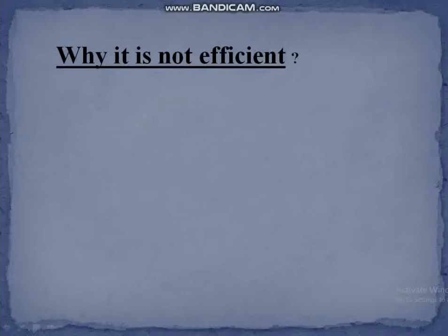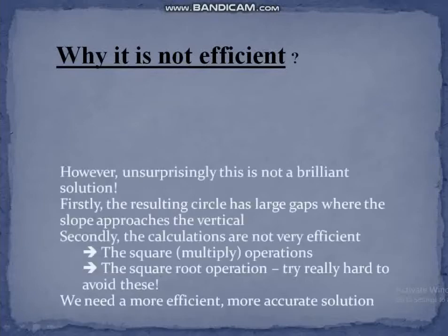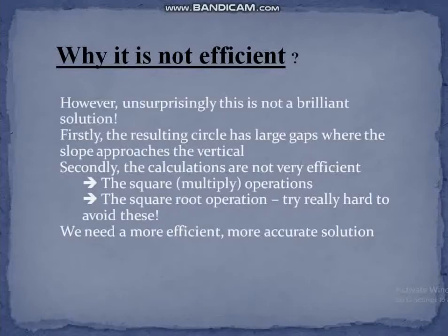This makes the simple circle algorithm very inefficient. The first reason is that the resulting circle has a very large gap where the slope approaches the vertical. Secondly, the calculations are not very efficient — it is very difficult because we have to calculate the square root more and more times. So we need a more efficient and more accurate solution.